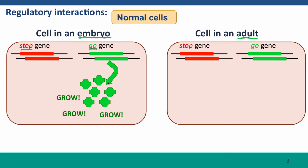The go gene produces a protein product that serves as a growth-stimulating product for the cell. It may directly stimulate cell growth, or it may regulate other genes that stimulate cell growth. Basically, when the go gene is on, the cells get the signal that this is the time to grow. This is very typical of what you would expect in an embryonic cell.